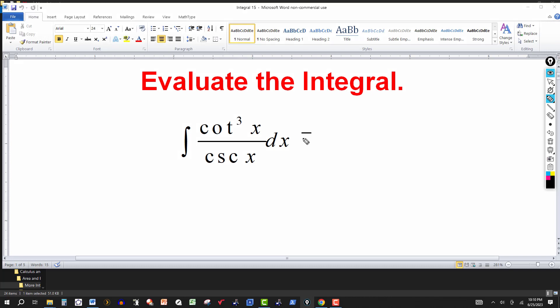I'm going to rewrite this in an equivalent form. I prefer to work with sine and cosine, tangent and secant. So I know that cotangent is cosine over sine. So I can rewrite that cotangent cubed as cosine to the third of x over sine to the third of x.